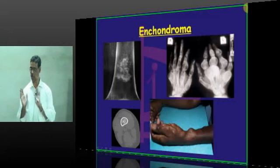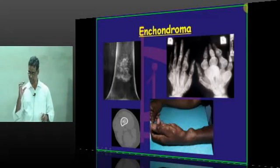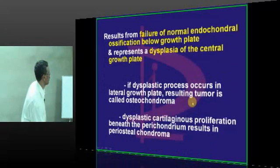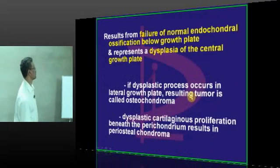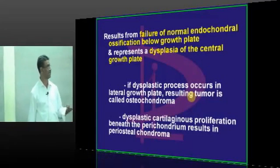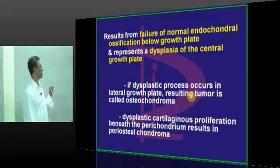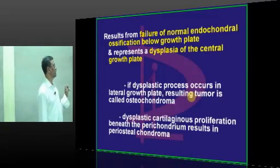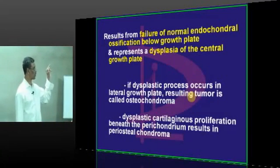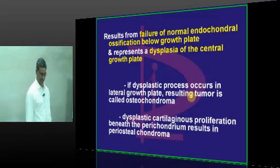Enchondroma results from the failure of normal endochondral ossification below the growth plate - dysplasia of the central growth plate. It is a growth of the central growth plate, and these two are the associated syndromes.